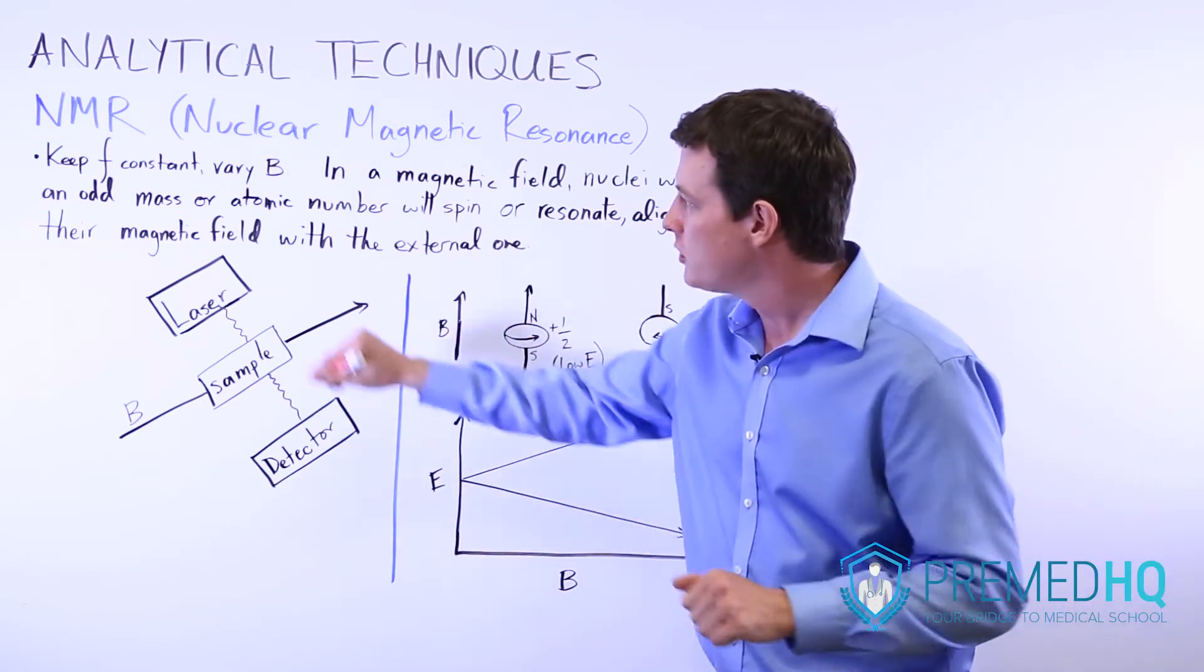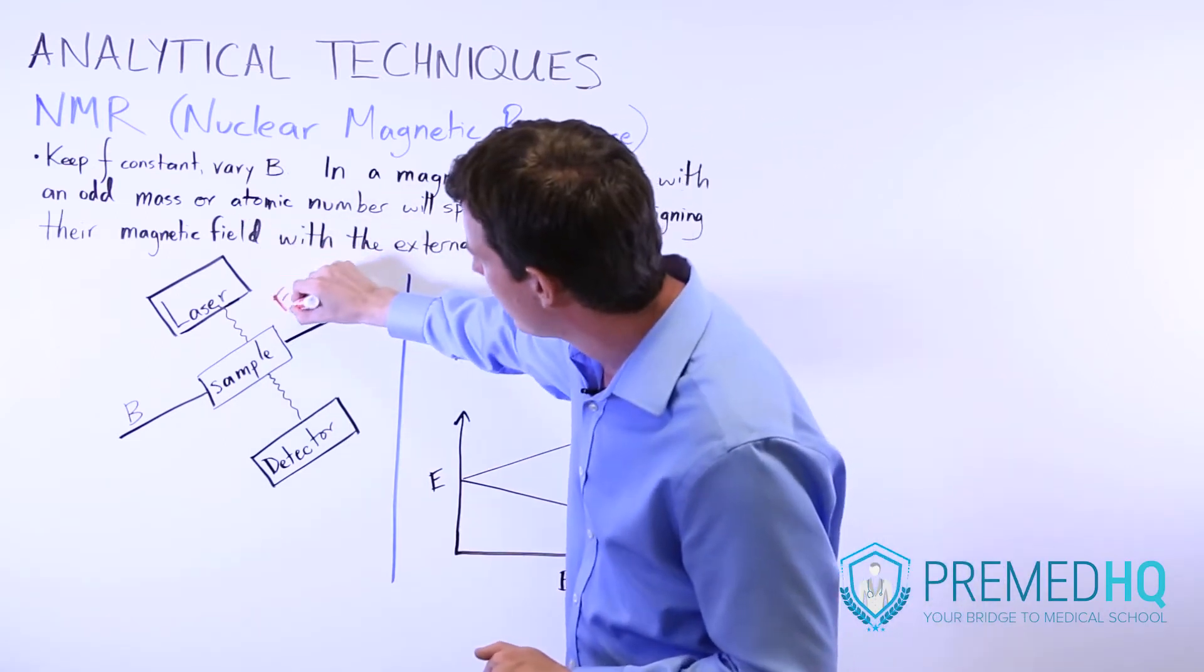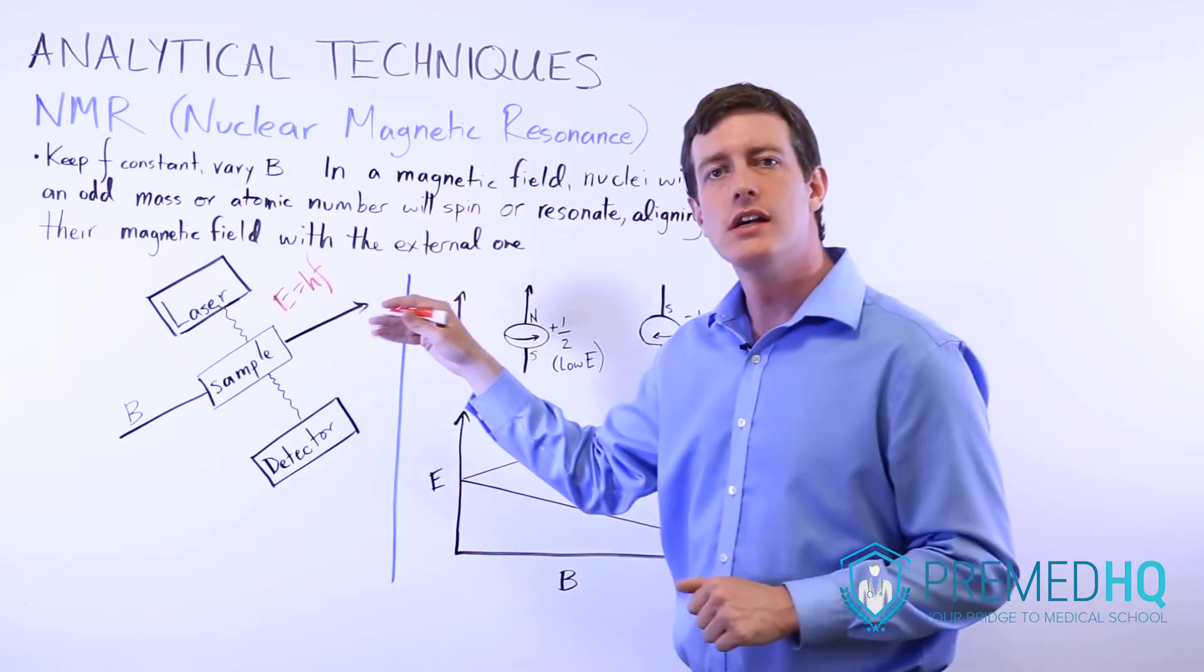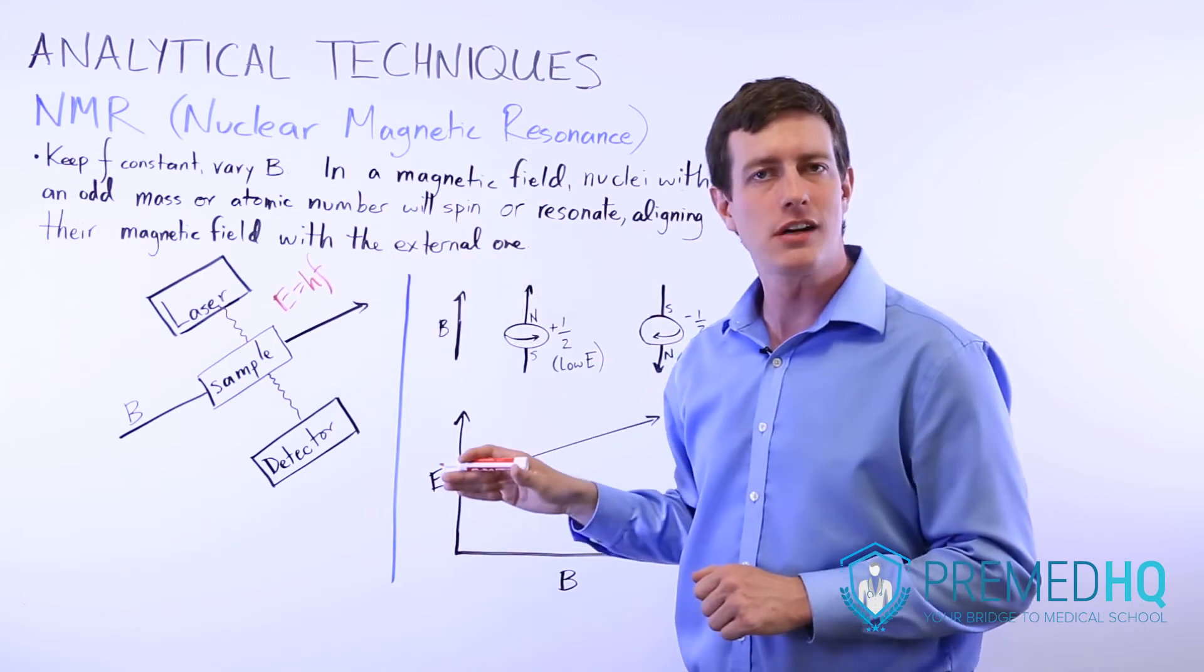Any nucleus that has an odd mass or atomic number can be used in NMR. And so what essentially happens is you shoot through the exact same frequency, and remember that the energy of a photon is equal to Planck's constant times the frequency, so if you keep the frequency constant you're going to keep the energy constant.